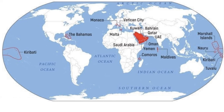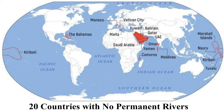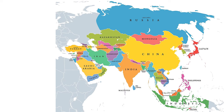There are a number of countries without rivers. These countries are found in Asia, Oceania, Africa, North America, and Europe. There are 20 countries with no permanent rivers.